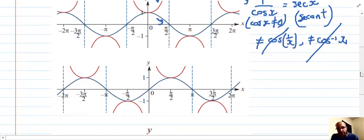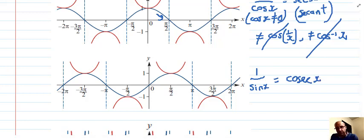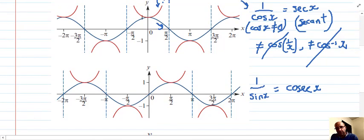The next one is similar looking but it is not exactly the same. When we go 1 over sin x, we get cosec x, which is the reciprocal trig function for sin x.